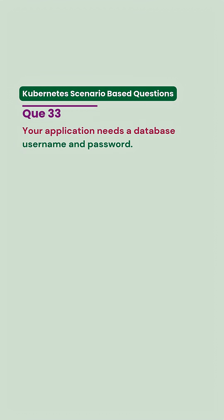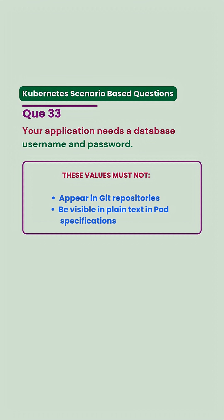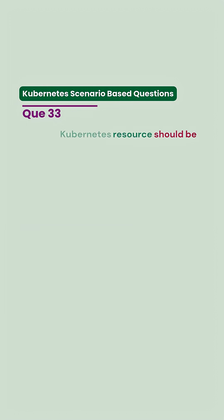Your application needs a database username and password. These values must not appear in git repositories or be visible in plain text in the port specification. Which Kubernetes resource should be used?